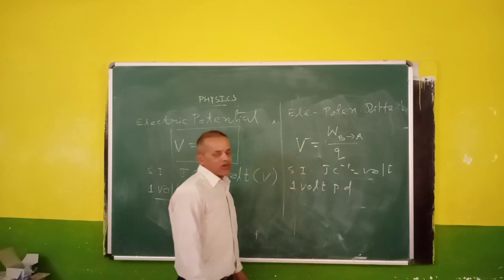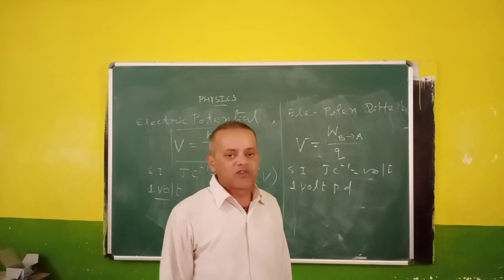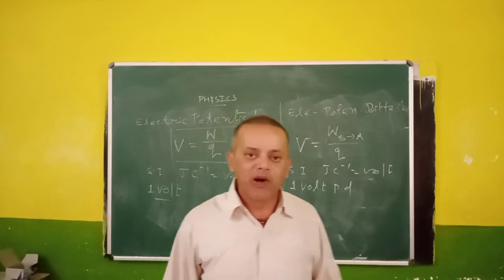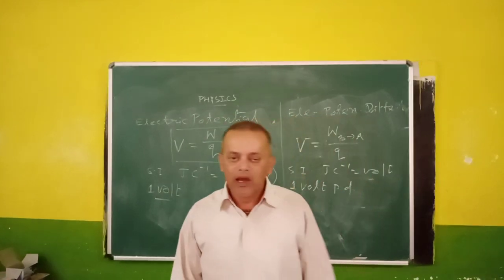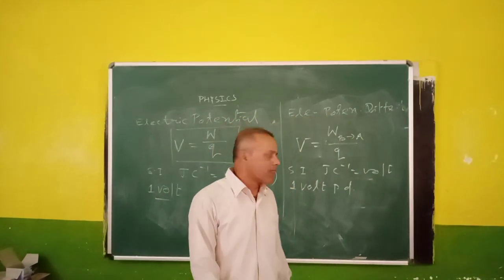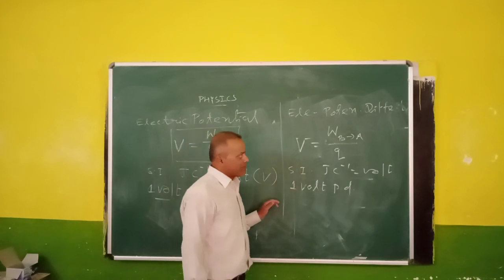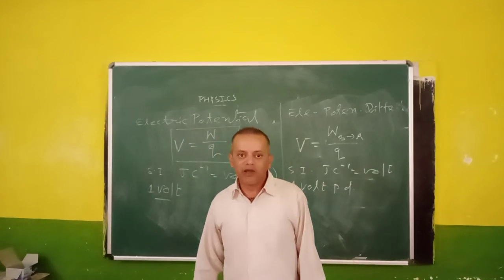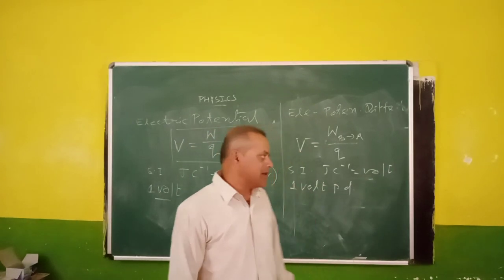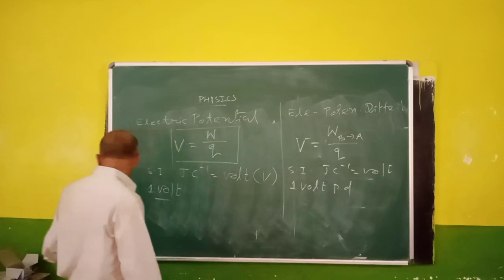If the amount of work done to move one coulomb of charge from one point to another in the electric field is one joule, then the electric potential difference between these two points will be one volt. This is the definition of one volt potential difference.